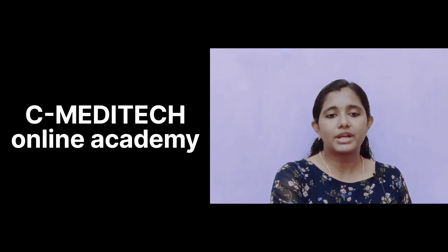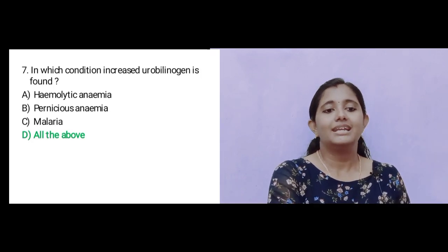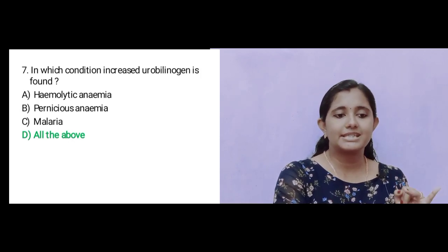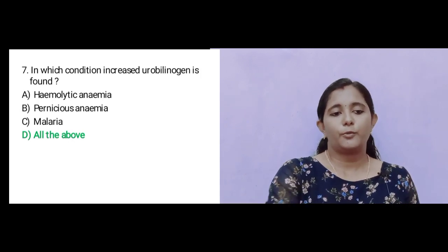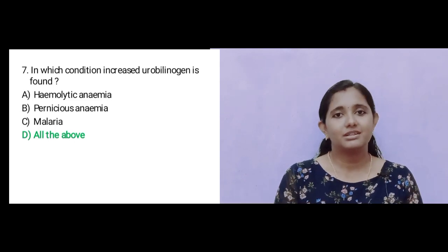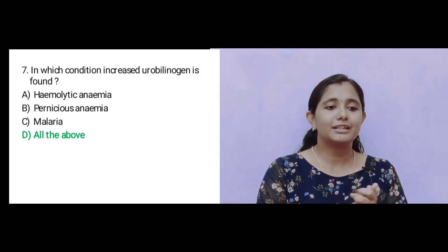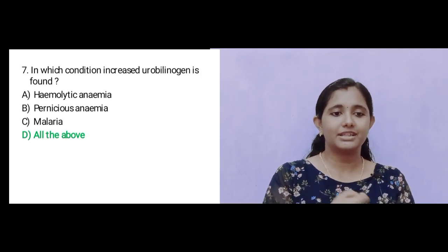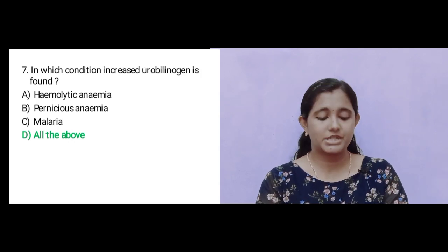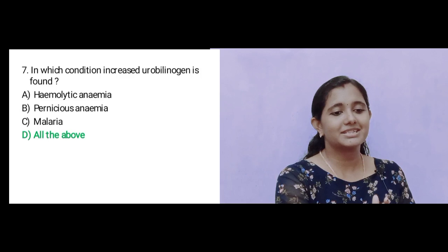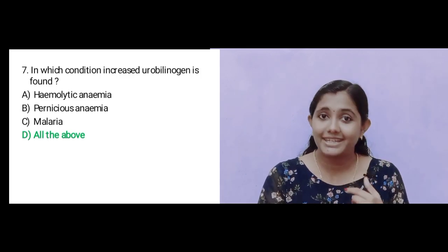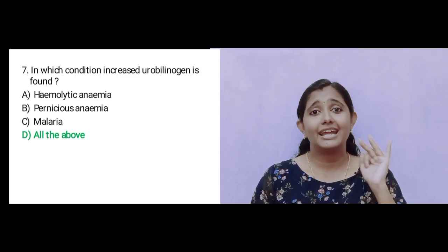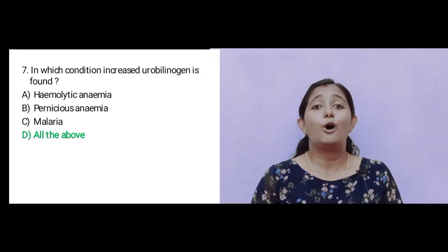Question number 7: In which condition is increased urobilinogen found? Option A: Hemolytic Anemia; Option B: Pernicious Anemia; Option C: Malaria; Option D: All of the above. The answer is D: All of the above.